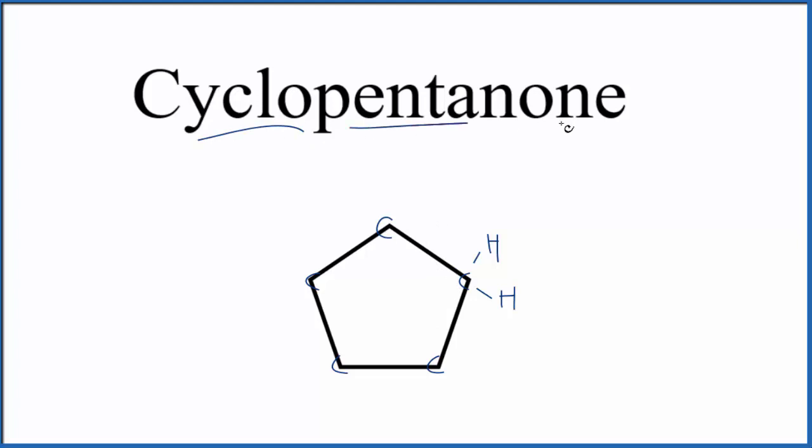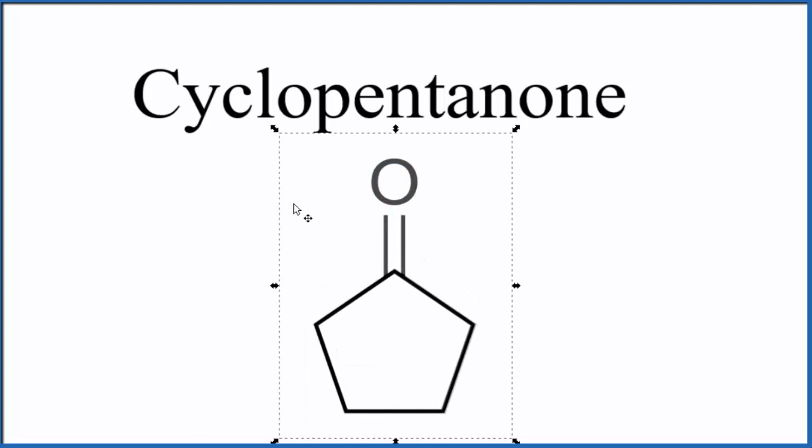But we're looking for cyclopentanone. We want the structural formula for cyclopentanone. So we said that this O-N-E means we have a ketone. We'll have a carbon double bonded to an oxygen. We could really put it on any of these, but let's just put it up top here. So we could draw that like this. So this is the structure for cyclopentanone.